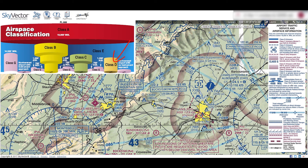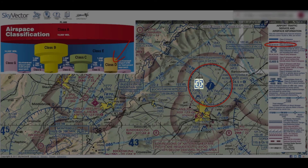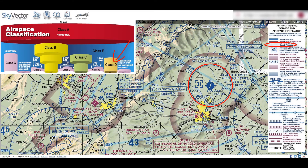Our next type of airspace is class D. Remember this airspace since D is for dialogue, because it's the lowest class of airspace that you must establish two-way radio communications to fly in. Class D is fairly simple since there is usually only a circle marked with a blue hashed line. Class D starts at the surface and goes up to the altitude marked in the box, read in hundreds of feet MSL. At Charlottesville Albemarle, the class D airspace goes from the surface to 3,100 feet MSL. Many class D airports have only part-time towers, and these will revert to class E or G airspace when the tower is closed.